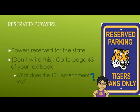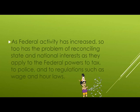Since we cannot meet in class, I wrote it down for you guys. It says: as federal activity has increased, so too has the problem of reconciling state and national interest as they apply to the federal powers to tax, to police, and to regulate — such as wage and hour laws. Essentially, what this says is that as the years have gone by since the Constitution was originally made, there's become a blur of lines based on how much the federal government should tax, police, and regulate things such as wage and hour laws.